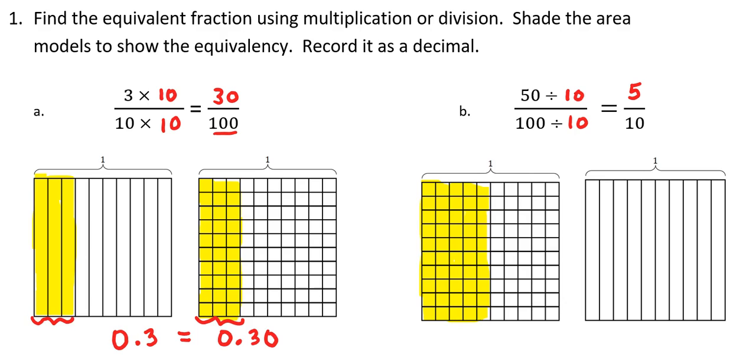So now we'll shade in 5 tenths on the second model. And you can see that, once again, both models have the same amount shaded in. This means I can say that 50 hundredths is the same thing as 5 tenths.